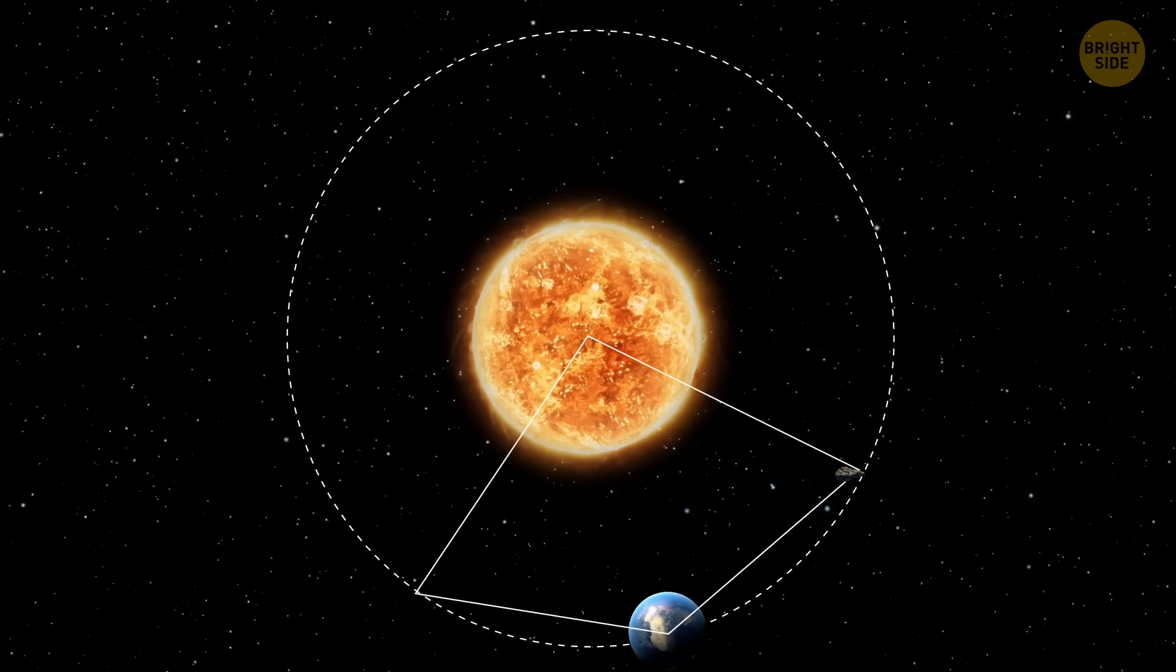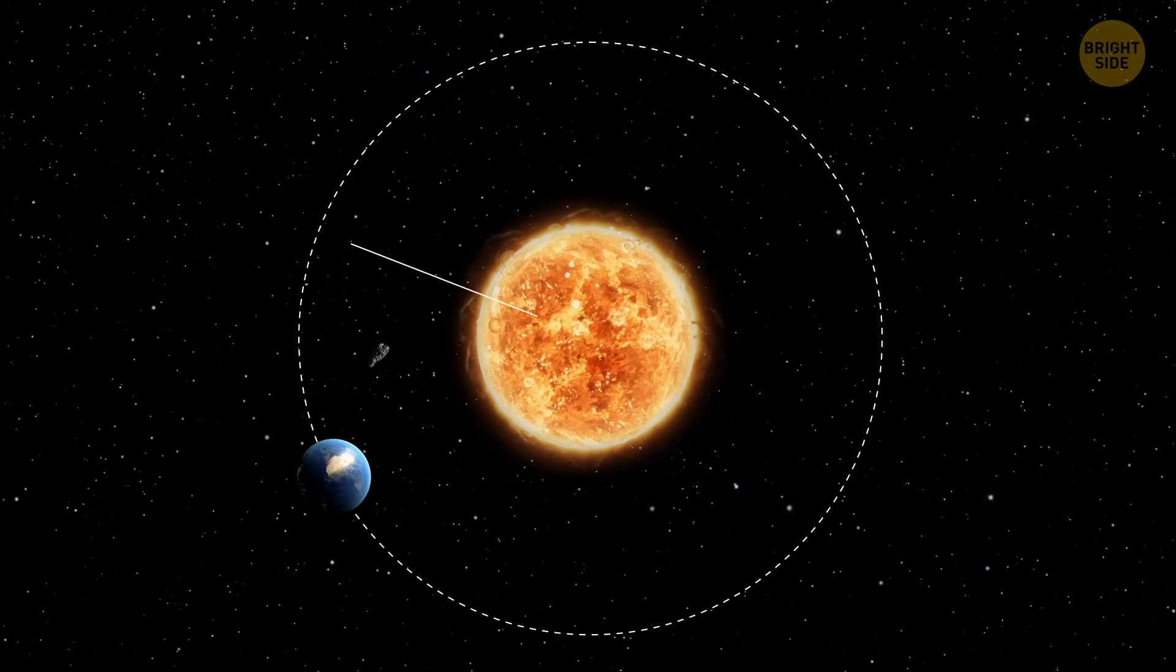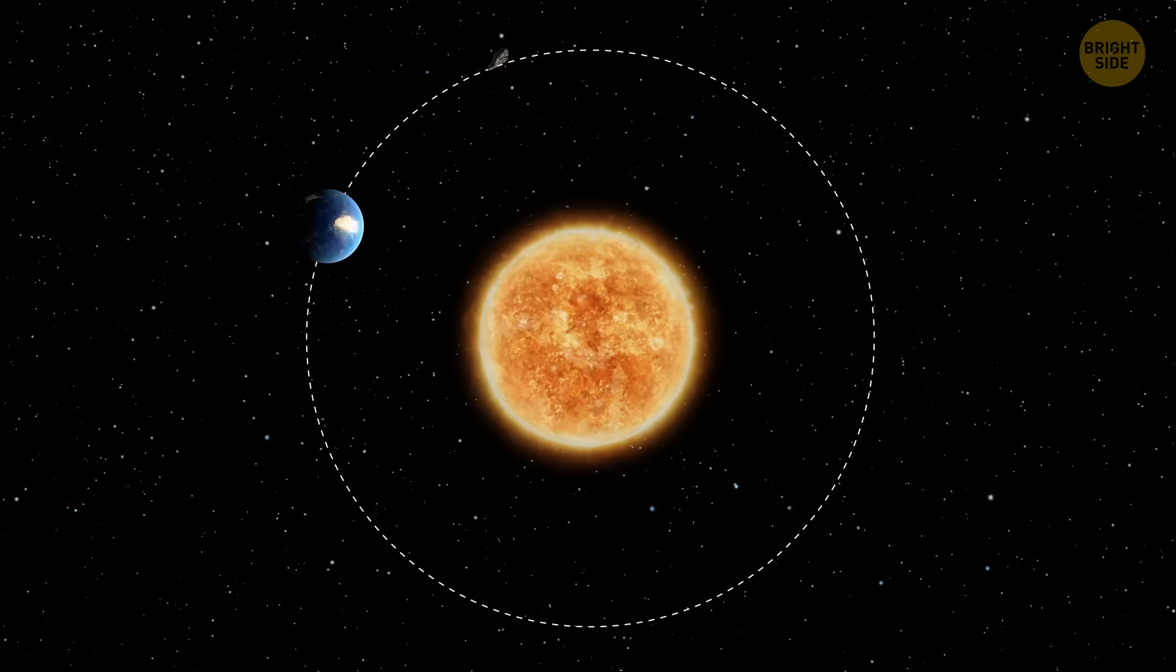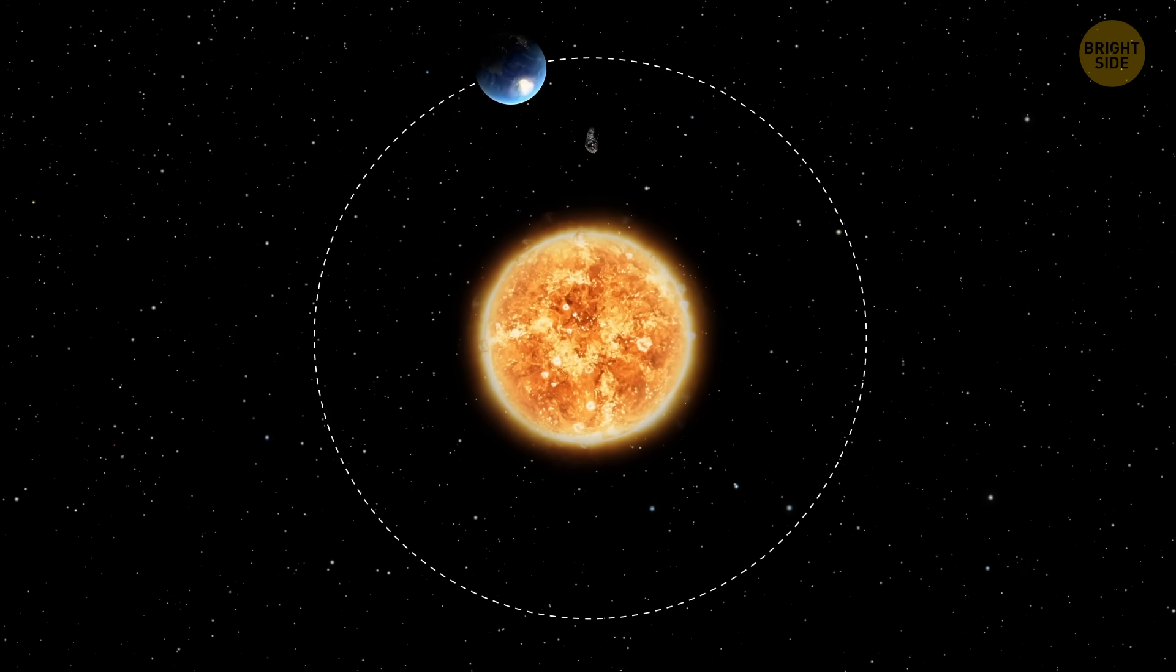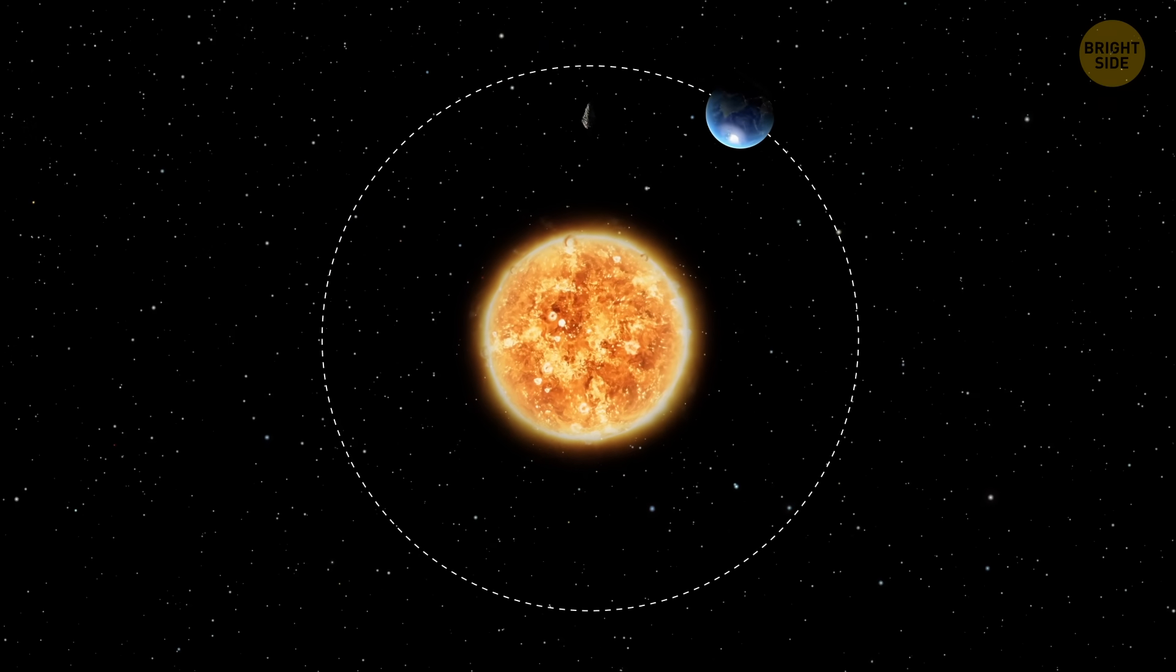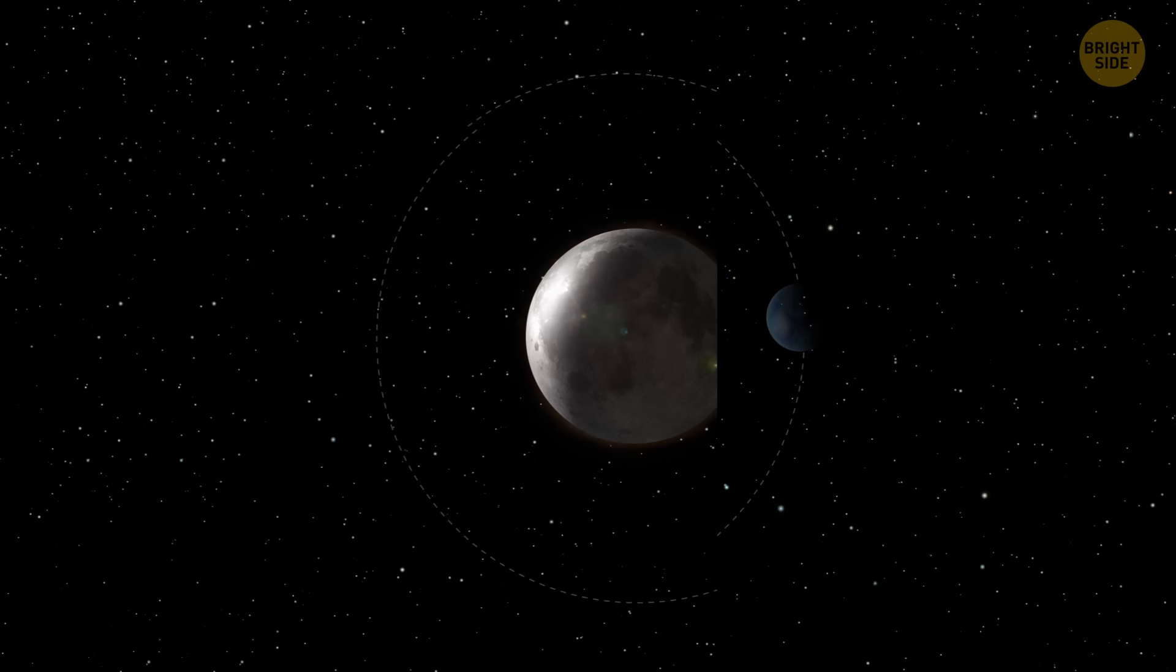So even though Earth only has one big moon in the sky, we've actually got a whole gang of intrusive space tagalongs. Some loop, some trail, some hide in the corners.